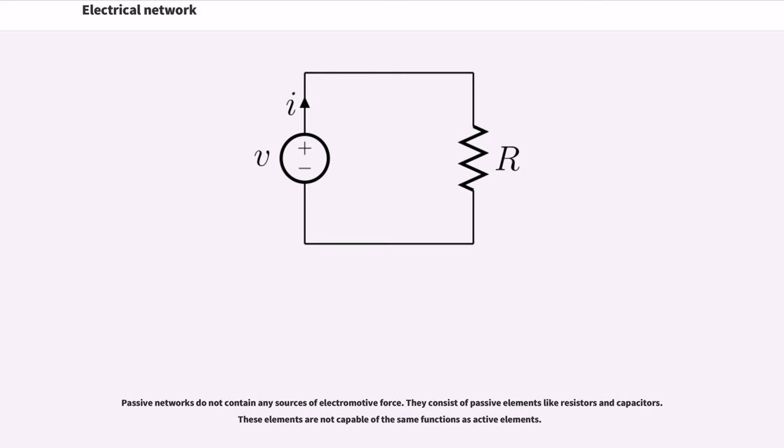Passive networks do not contain any sources of electromotive force. They consist of passive elements like resistors and capacitors. These elements are not capable of the same functions as active elements. A network is linear if its signals obey the principle of superposition, otherwise it is non-linear.